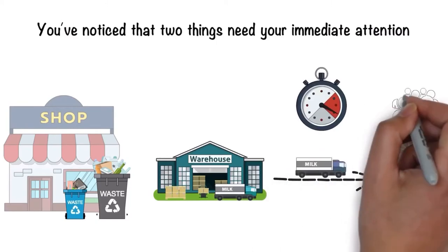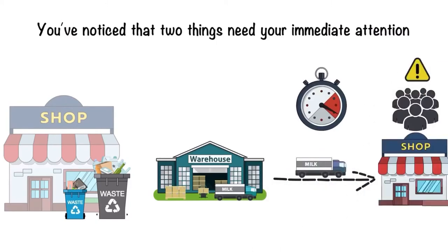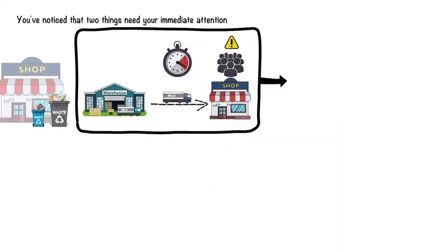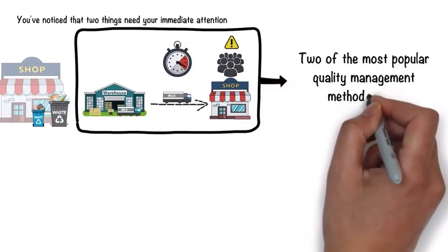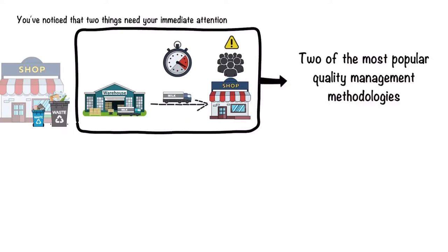Leading to customer dissatisfaction and attrition, these problems can be solved by incorporating two of the most popular quality management methodologies in the world: Lean and Six Sigma.